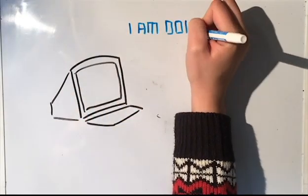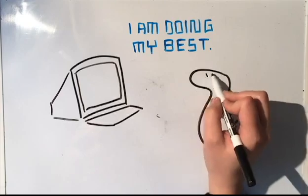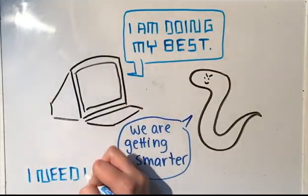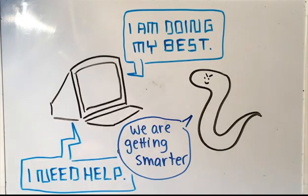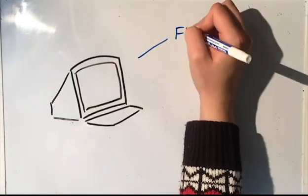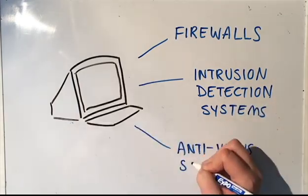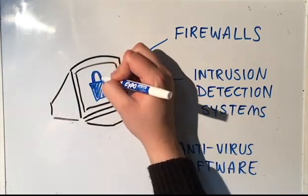Computers do what they can to make everything safe. However, viruses and the like are getting more and more sophisticated, so oftentimes additional measures need to be taken. Users like yourself can choose to add firewalls, intrusion detection systems, and antivirus software to your computer in order to protect yourself and your data.